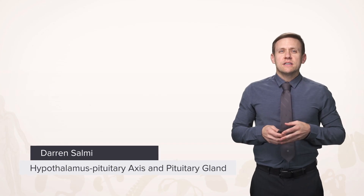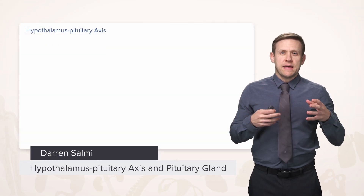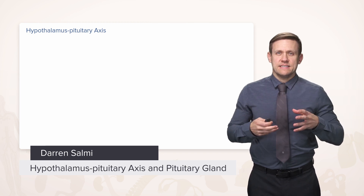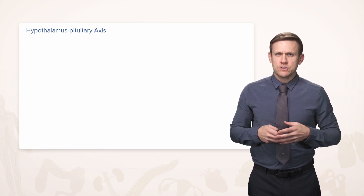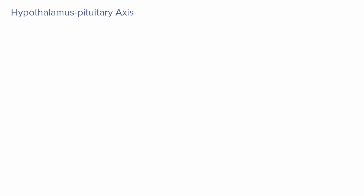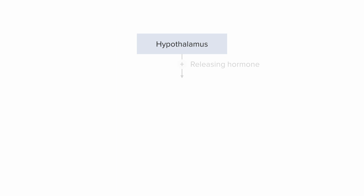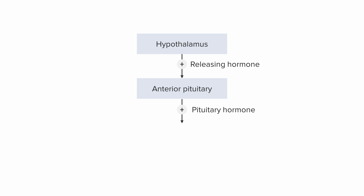Let's look at the concept of the hypothalamus-pituitary axis and how things relate when we talk about endocrine function. We can think of things as starting in the hypothalamus, with some sort of releasing hormone getting into that short portal system to stimulate the anterior pituitary. It will in turn then secrete some sort of pituitary hormone that will flow out in the bloodstream to reach its target gland.